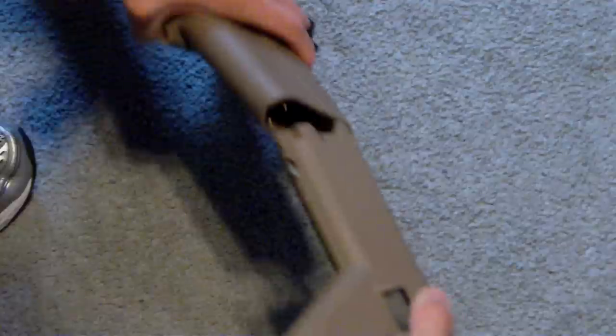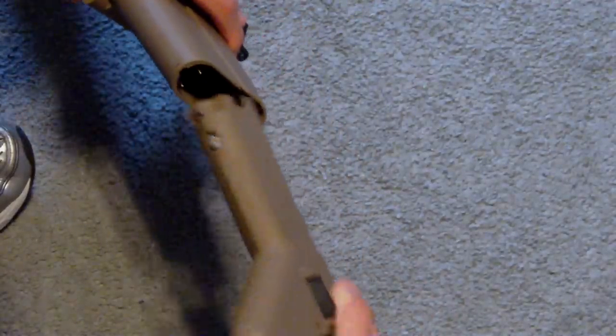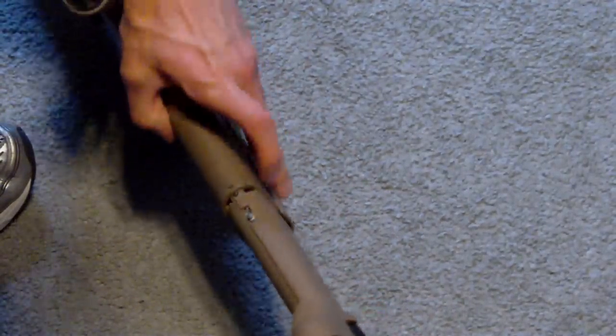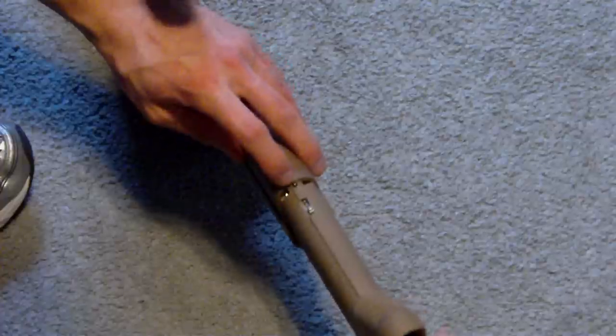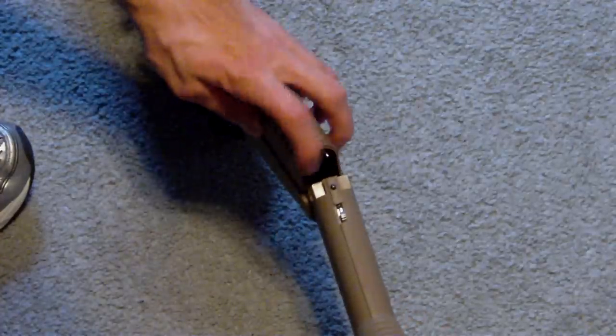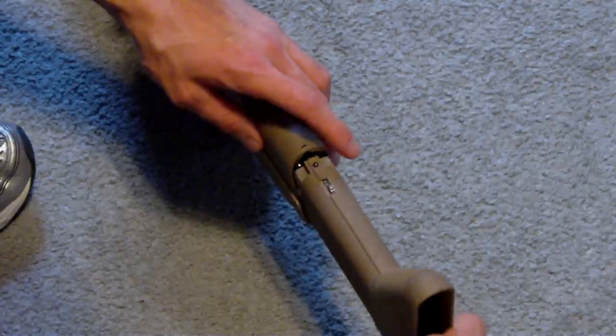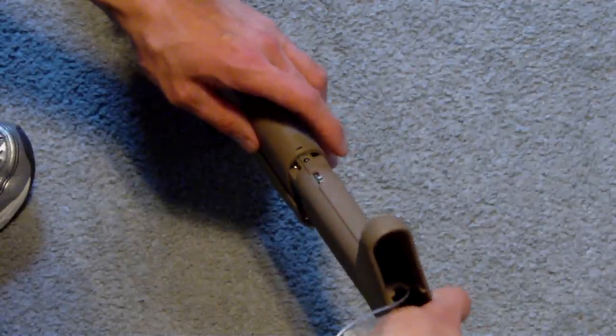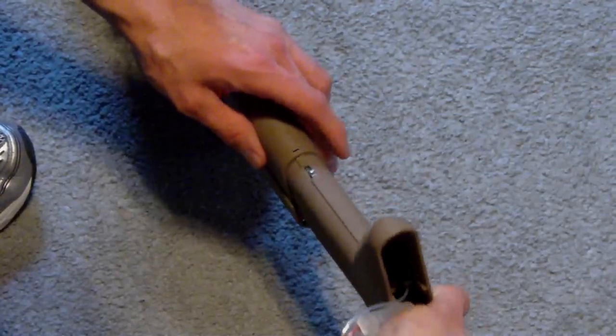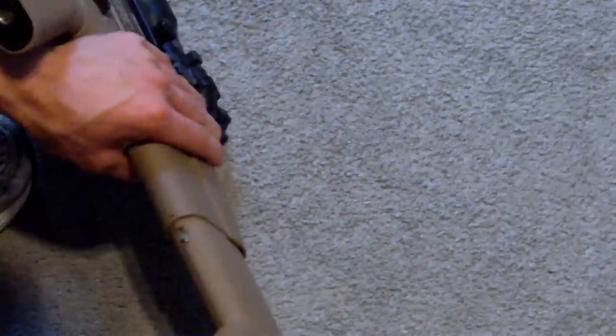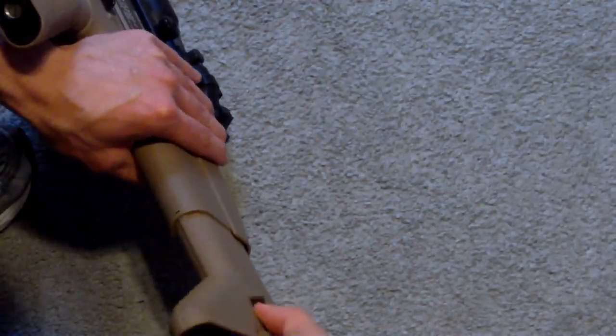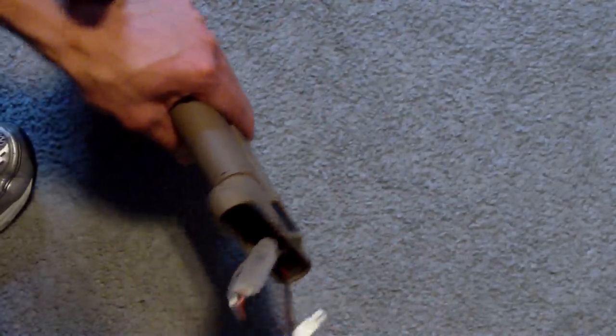Then, take the stock. Line it back up. Be careful not to bend the prongs that are in here. There are two gold-plated prongs. Line that back up. Push the button. And then, collapse the stock.